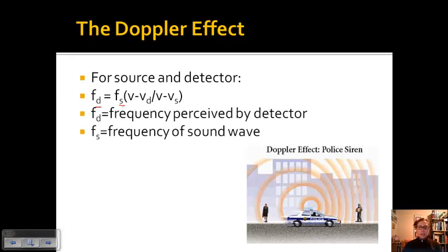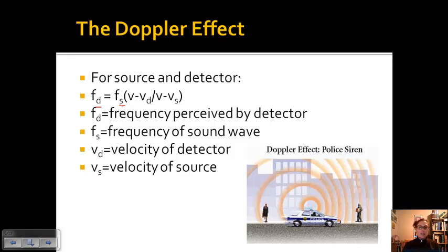F of D is the frequency perceived by detector. F of S is the frequency of the sound wave. V of D is the velocity of the detector. V of S is the velocity of the source. And V is the velocity of the sound wave.